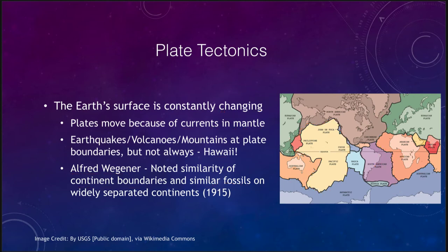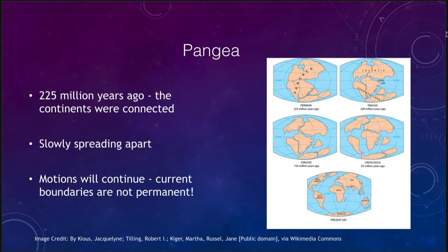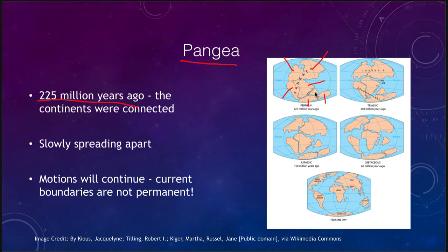Let's look at how some of these motions have worked over the years. 225 million years ago, all of the continents were connected into a great continent called Pangaea. You can make out North America, South America, Eurasia, Africa, Antarctica, Australia, and India — with India its own separate plate. 25 million years later, things had started to separate — North America and Eurasia were still connected, and South America and Africa were connected, but India had started to separate and move northward.